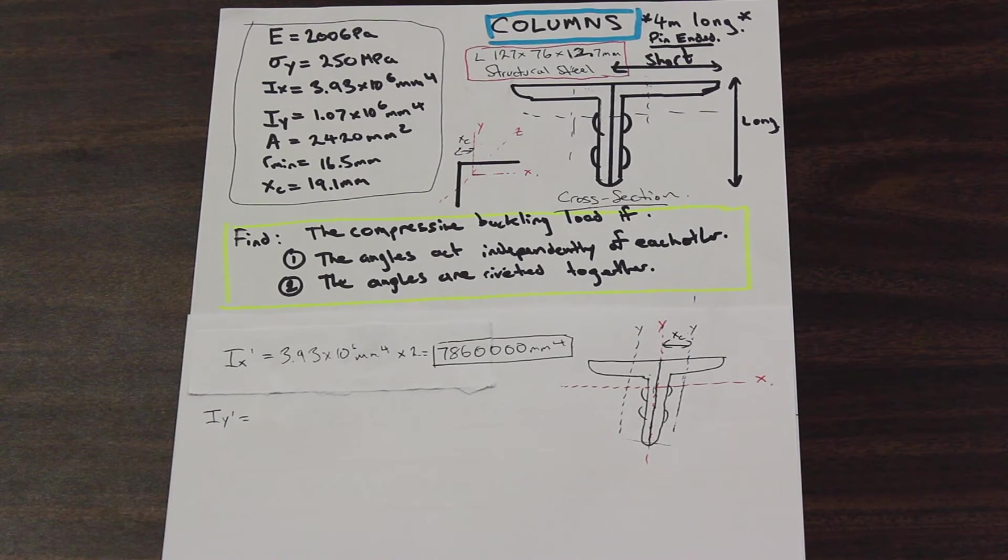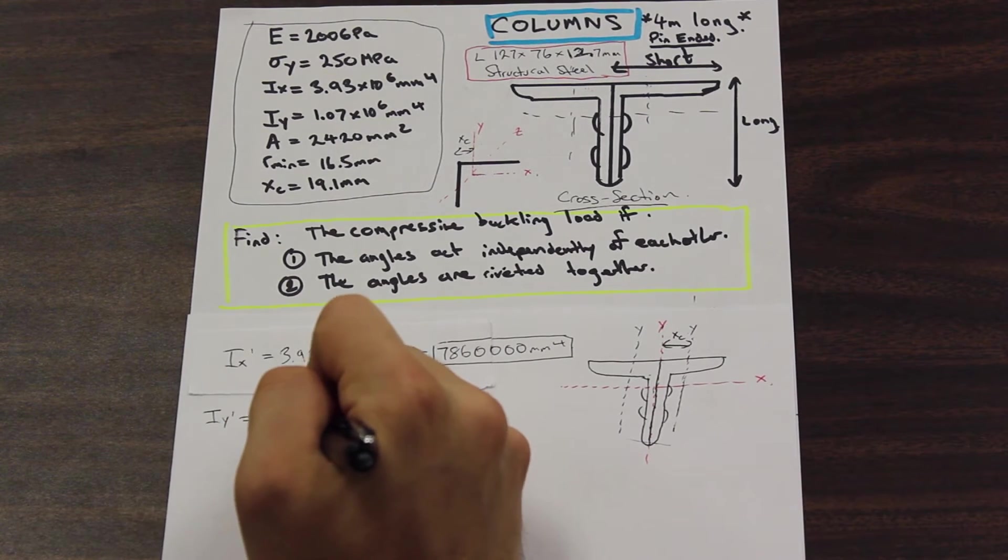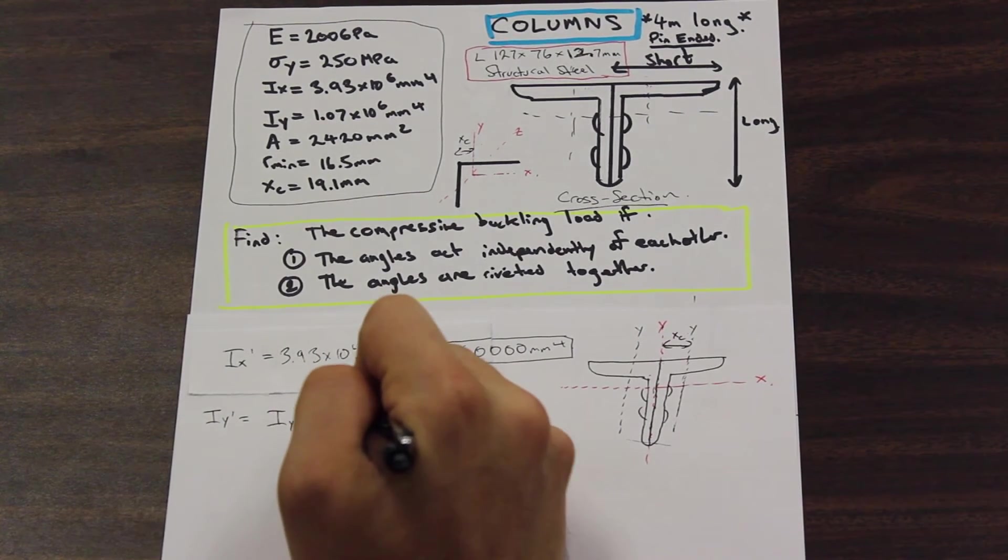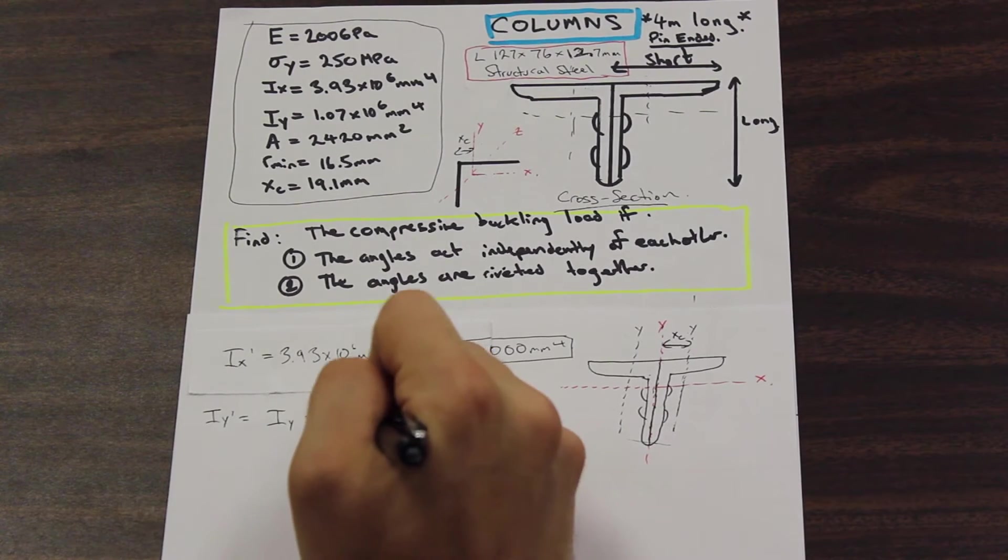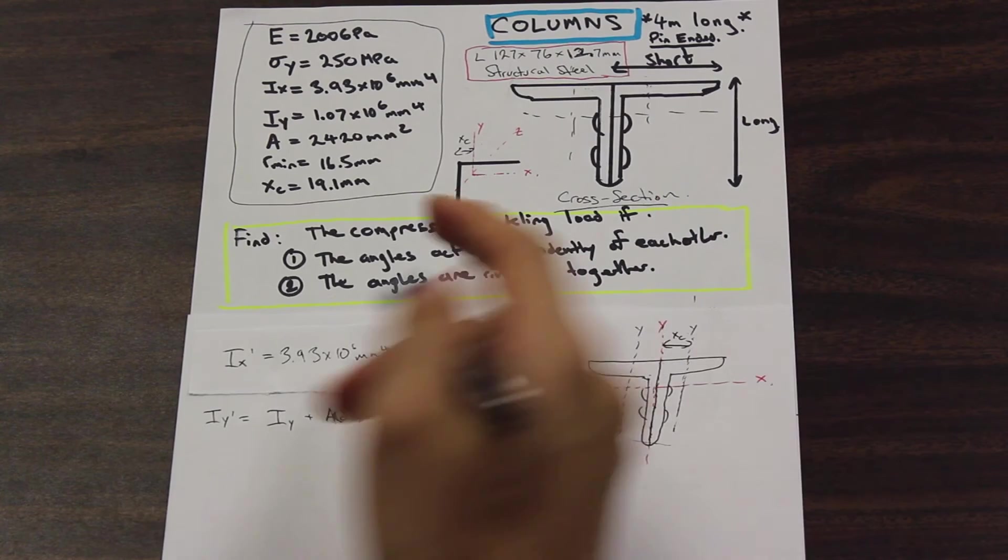All we need to do is use our parallel axis theorem, which is going to be I_y plus A dx squared. We're going to use this and find our new moment of inertia. So let's begin.